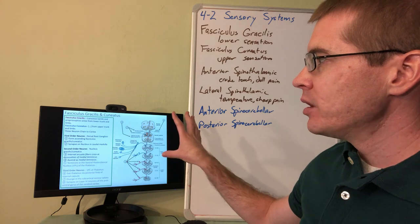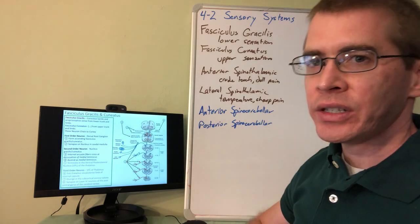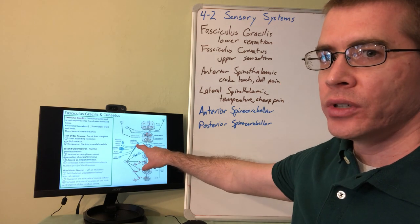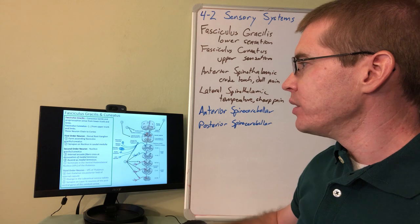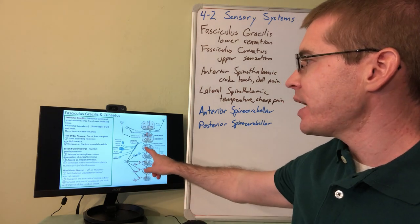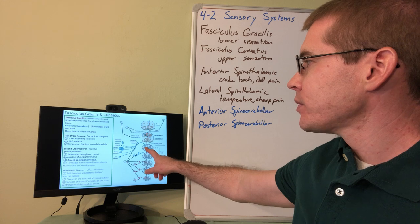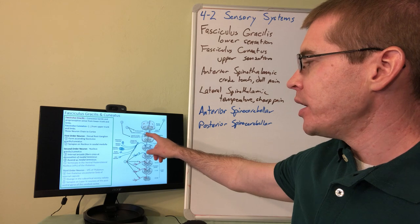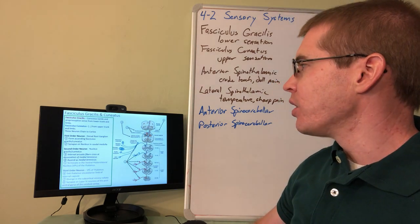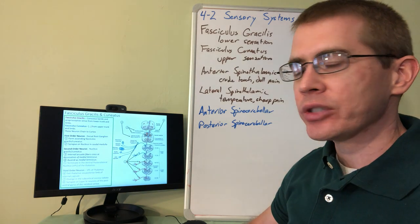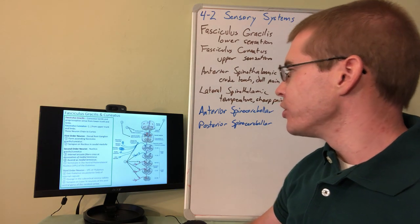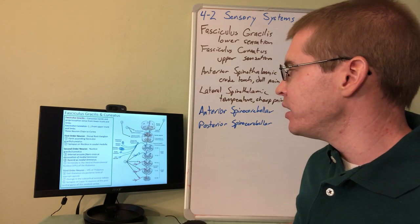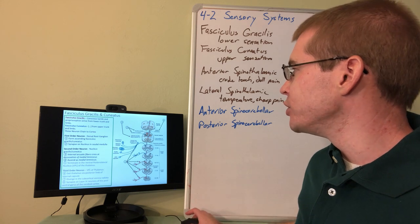Here we're talking about the gracilis and cuneatus fasciculi. So the first order neuron is the dorsal root ganglion. Those are going to actually ascend and synapse on a medullary nucleus called the gracilis or cuneatus nucleus. Those fibers are then going to ascend through the medial lemniscus, this little shaded area here in the upper medulla.